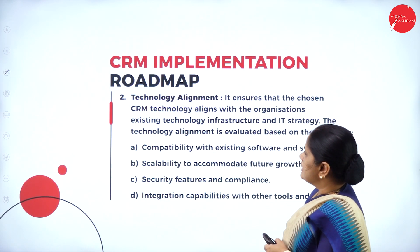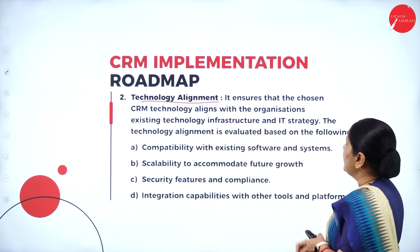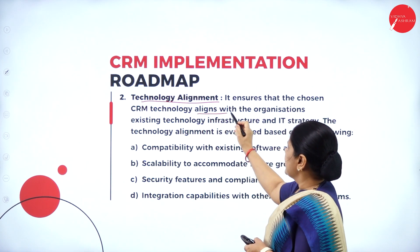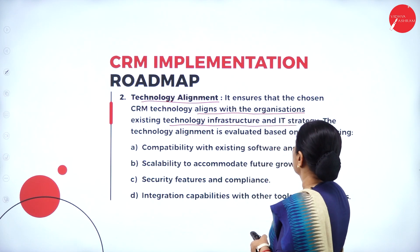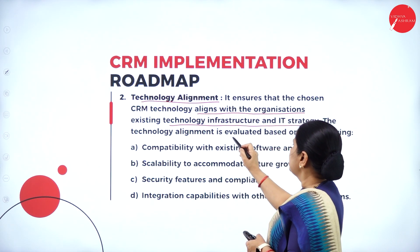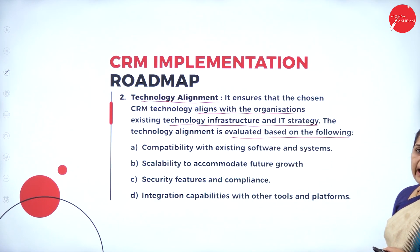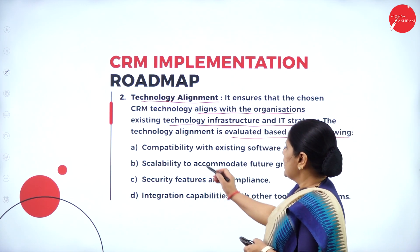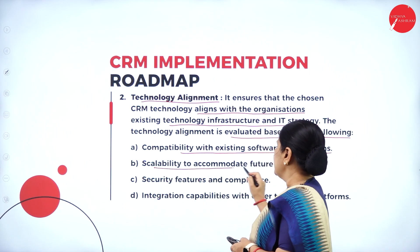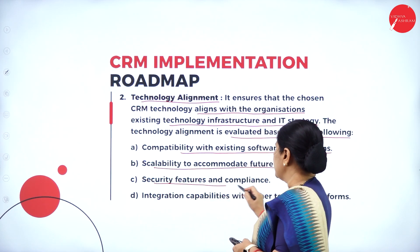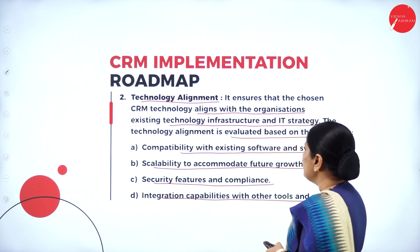The second aspect is technology alignment. It ensures that the chosen CRM technology aligns with the organization's existing technology infrastructure and IT strategy. Technology alignment is evaluated based on: compatibility with the existing software and systems, scalability to accommodate future growth, security features and compliance, and integration capabilities with other tools and platforms.